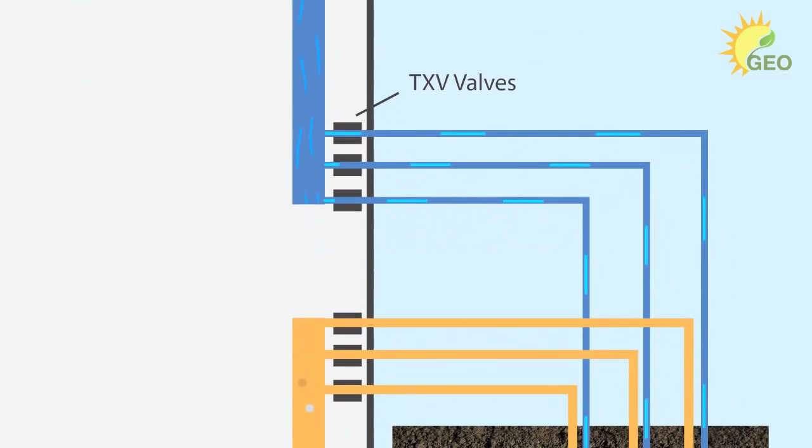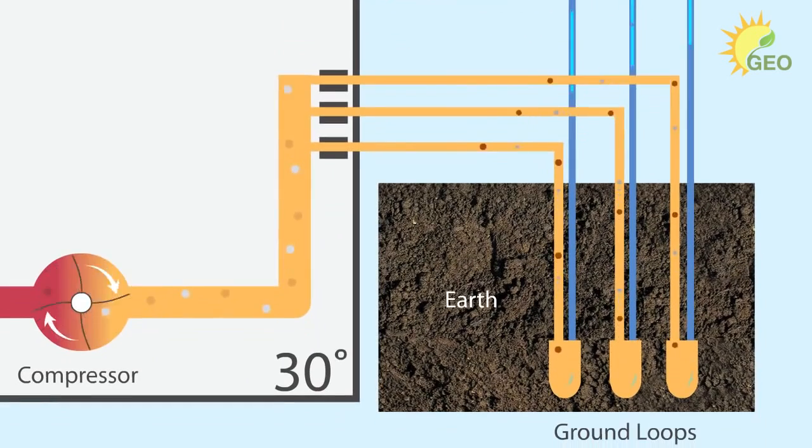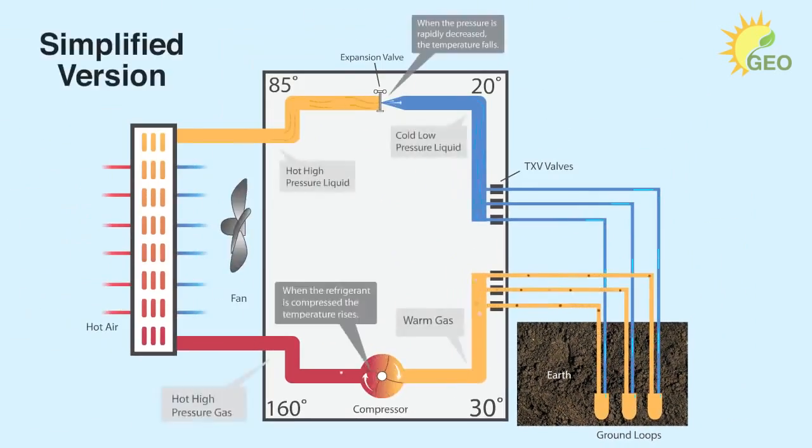It then moves toward the TXV valves. These valves control the amount of refrigerant distributed to each ground loop. The refrigerant is then piped out to the wellfield and down the vertical boreholes where it begins its transformation back to a gas. As it transitions back to its gaseous state, it absorbs heat energy from the earth and travels back to the compressor where this ingenious process is repeated.